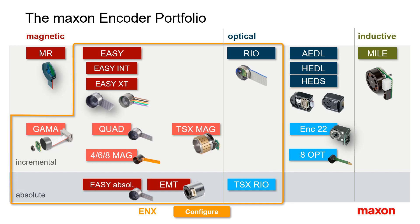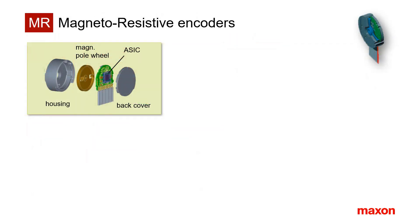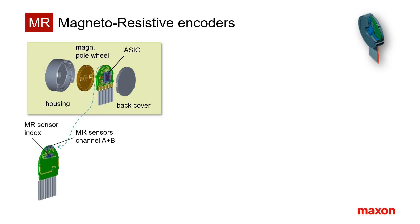In the following, let me give some background information for the most important of these families, shown here in dark colors. MR stands for the magnetoresistive principle that is used in the sensors for channels A, B, and index.